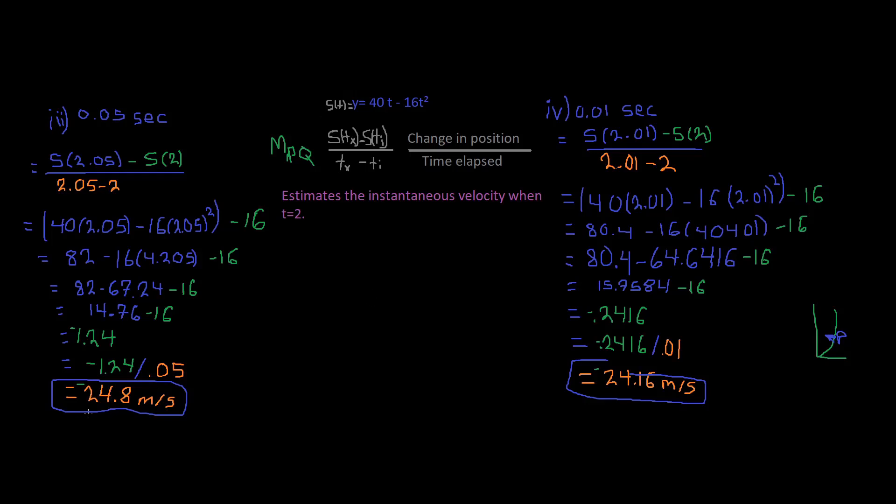So there's a trend happening right here, and these numbers are going really close to - we could make the assumption - the number 24. And so this says estimate the instantaneous velocity when t equals 2. And it appears that as we shorten the time period, the average velocity is becoming closer to 24 meters per second.